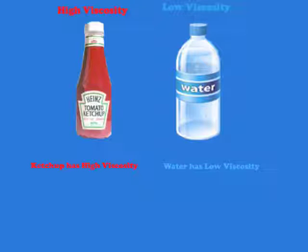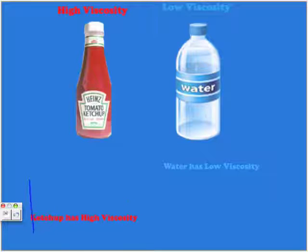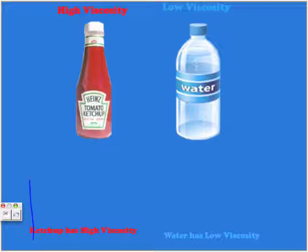High viscosity: ketchup takes a longer time to flow down, so it has a higher viscosity and a much thicker texture. Water has a low viscosity and will flow faster, having a high flow rate.